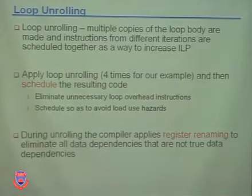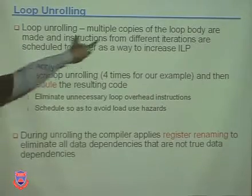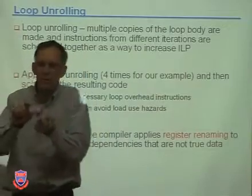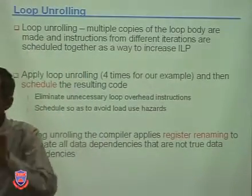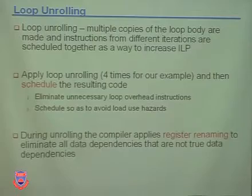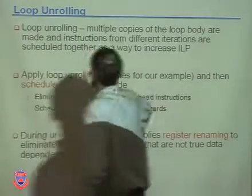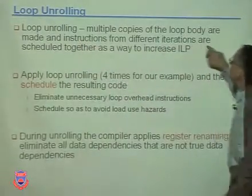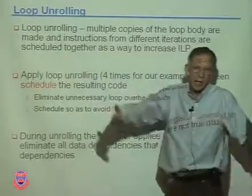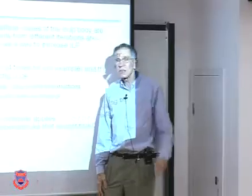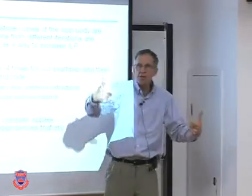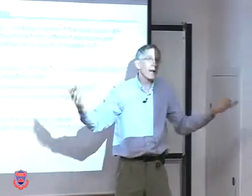Loop unrolling means making multiple copies of the loop body - not the loop control instructions, not the loop counter and the test, but the body, the actual work. Then instructions from different iterations can now be scheduled together in a better way. Instructions from the first time through, the third time through, can be packaged together.